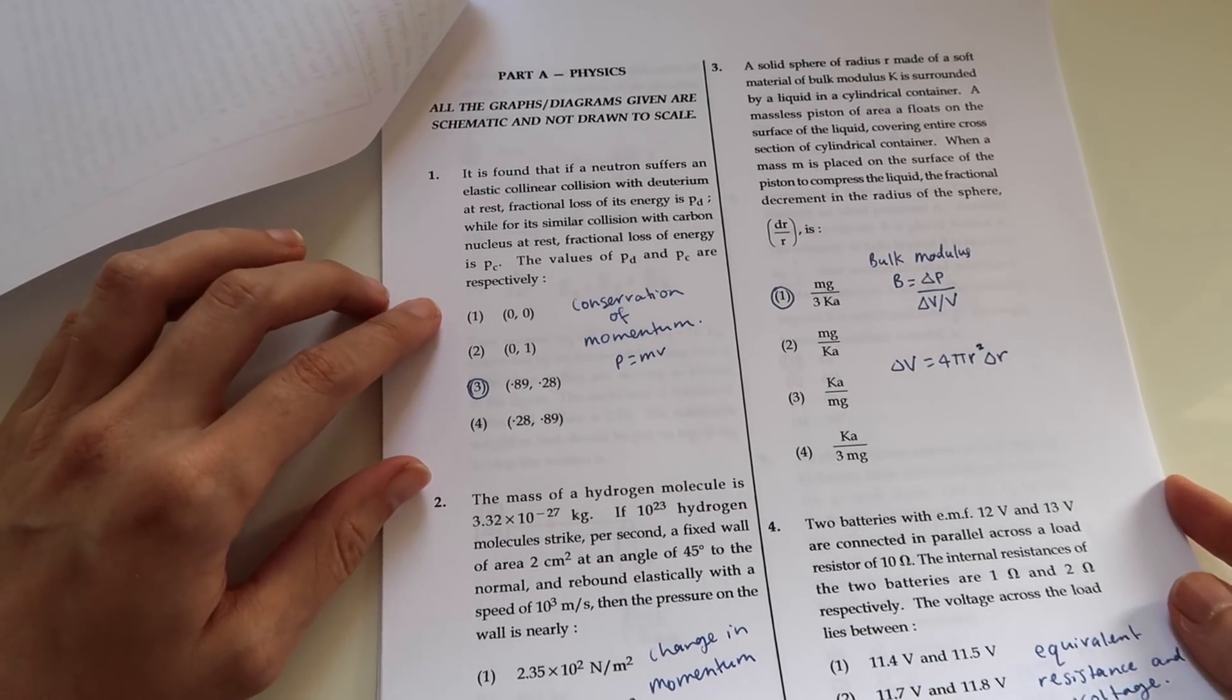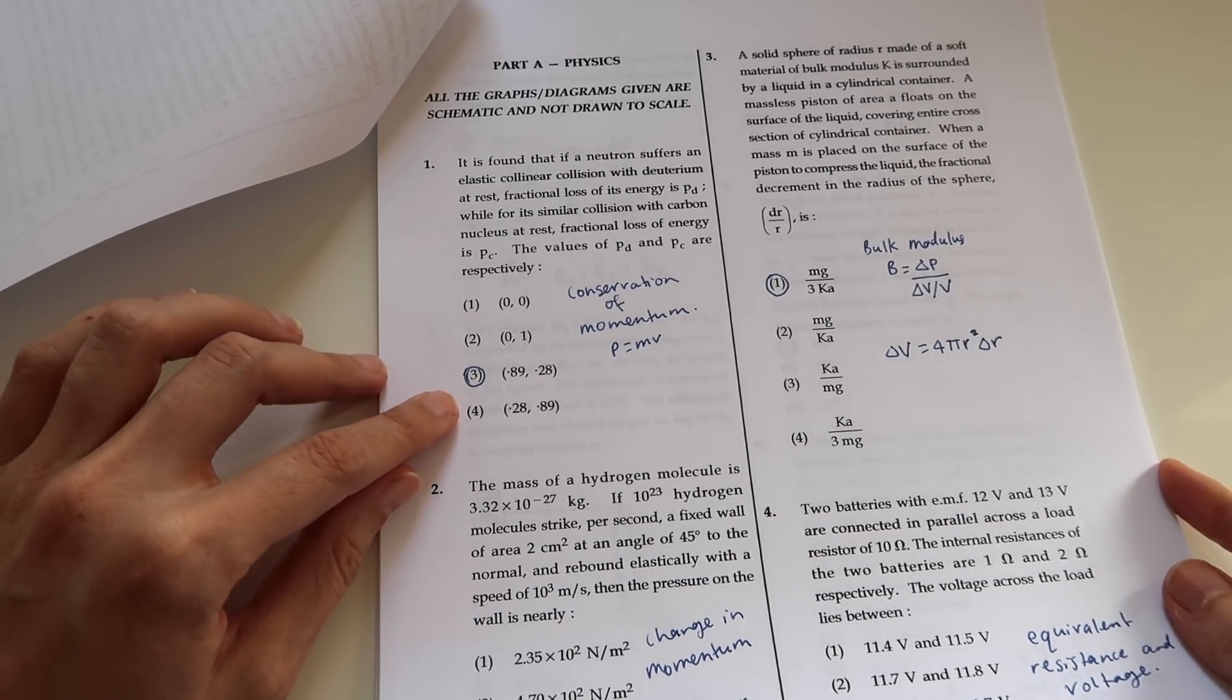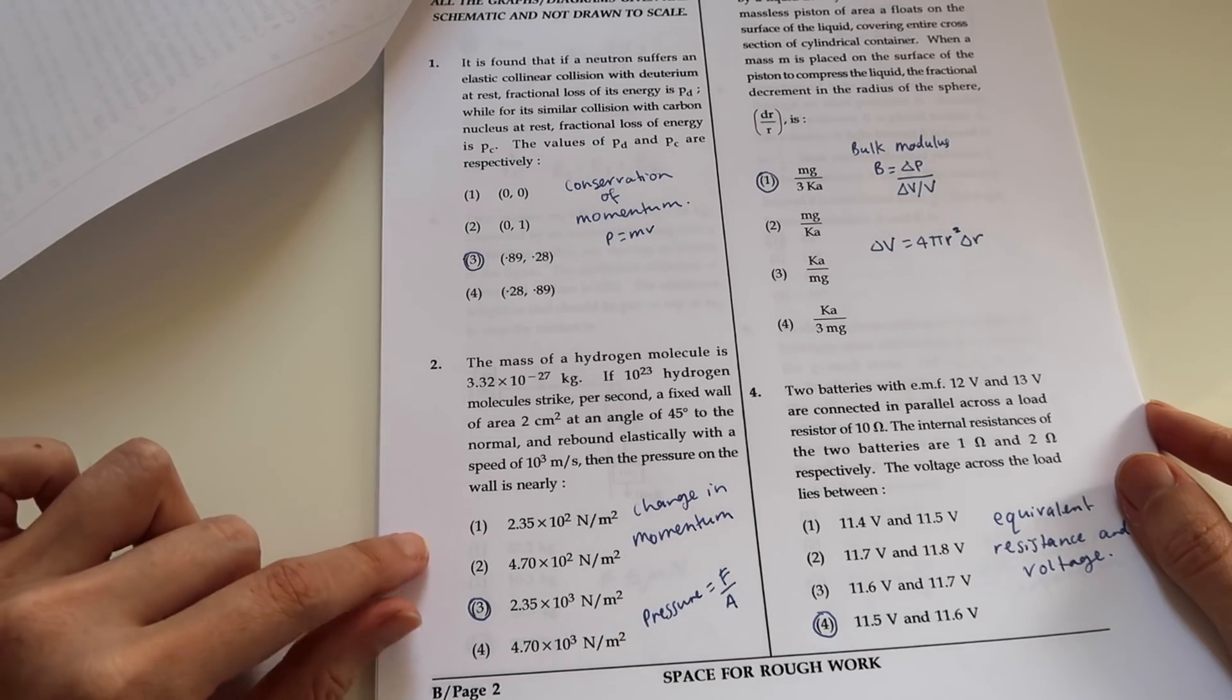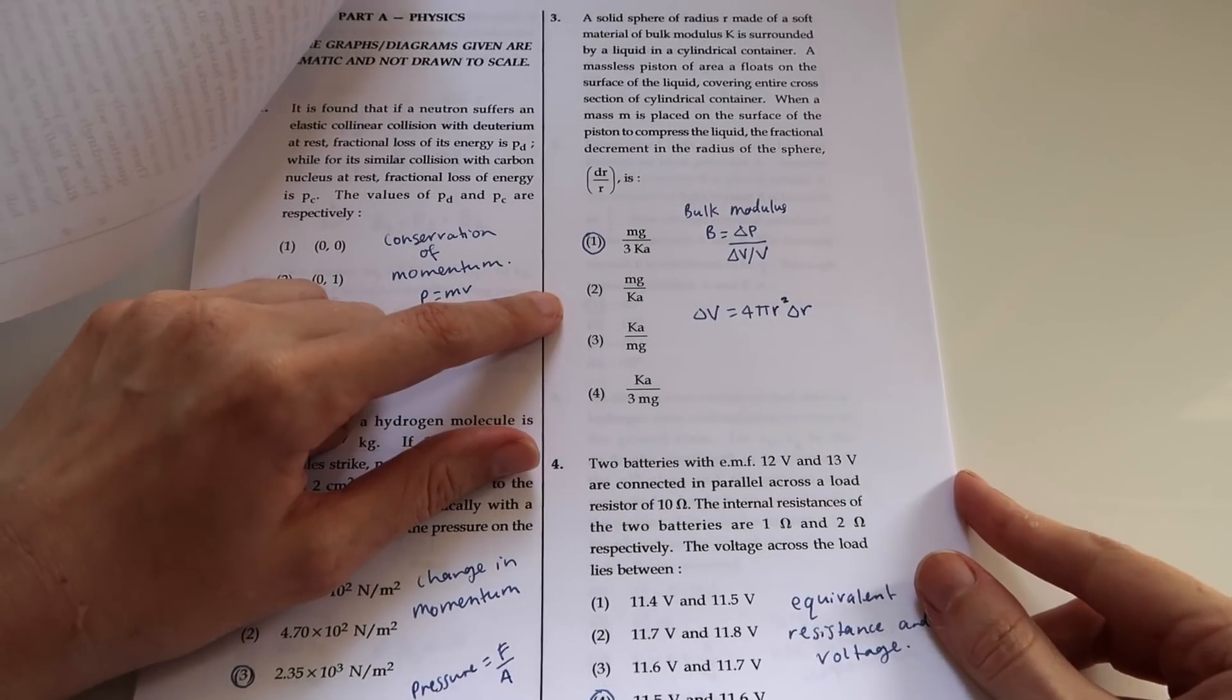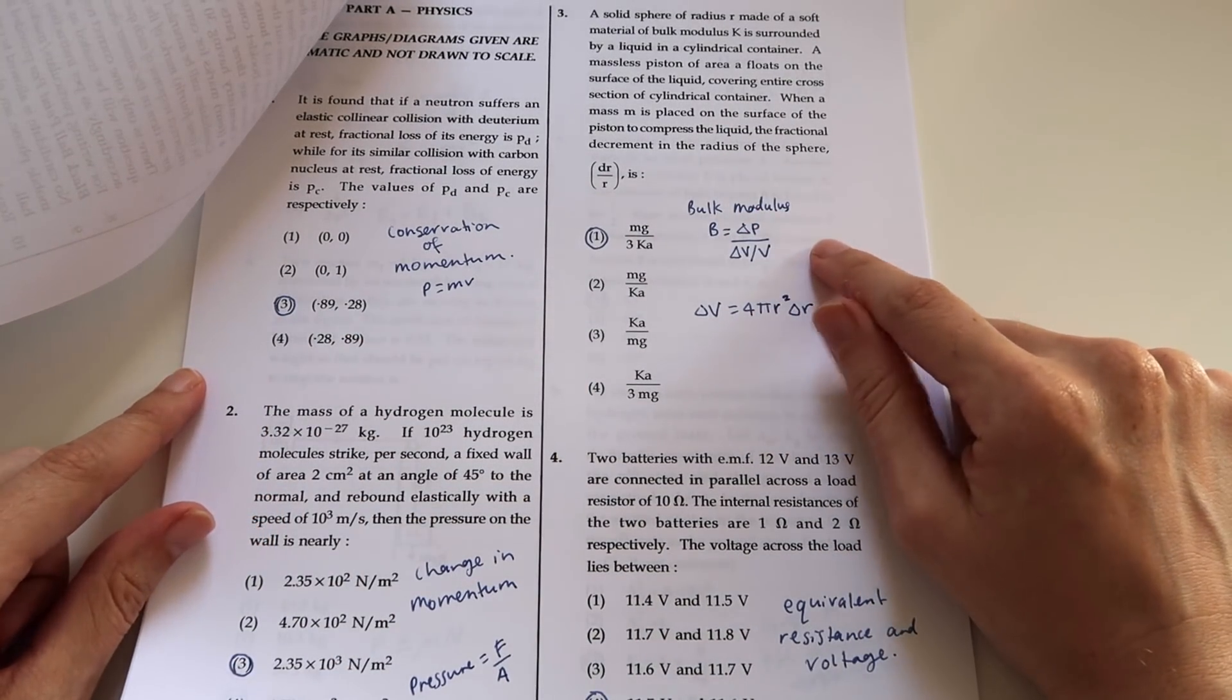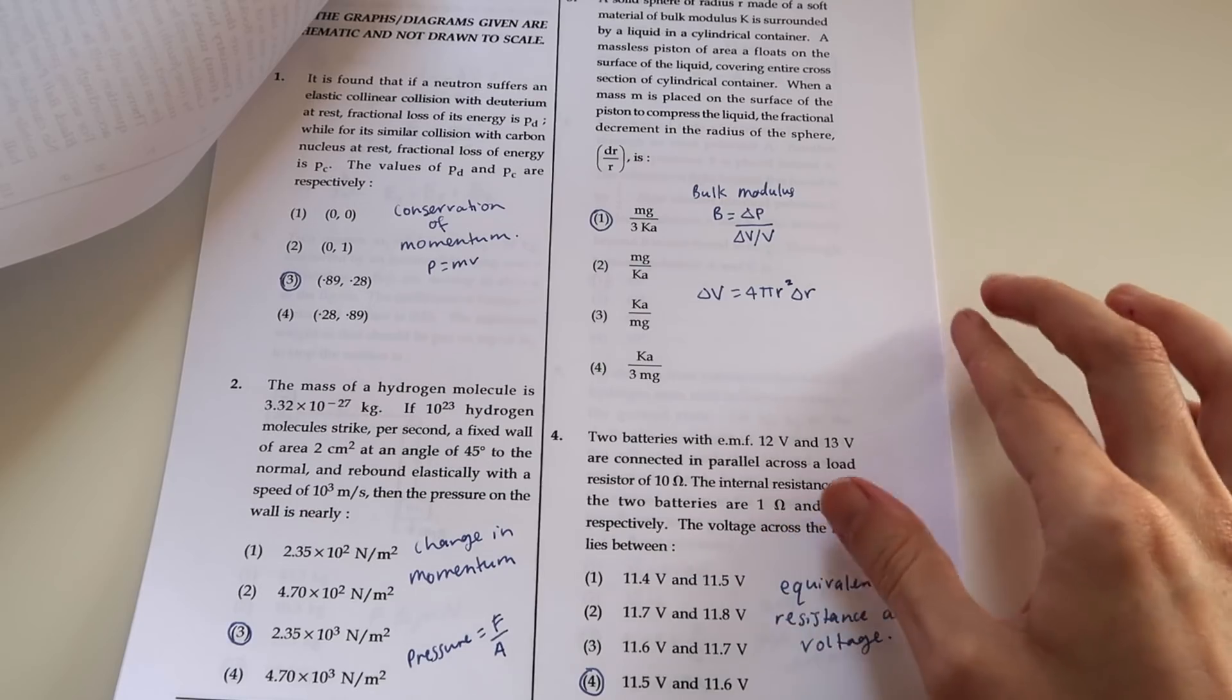We're starting off with a question about energy and momentum, specifically about collisions. This question uses the idea of conservation of momentum. Then we go on to heat and thermodynamics and a question about the kinetic theory of gases. Here you're working with the change in momentum and with pressure. Question 3, we're dealing with properties of matter in terms of elasticity. I've written down here the formula for the bulk modulus, which is what you're going to need to get started here. Also, you're going to need a relationship between volume and radius.